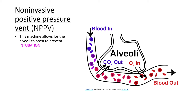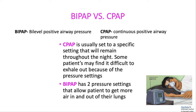Non-invasive positive pressure ventilation (NPPV) is commonly used for the patient with COPD, hypercarbia, acute asthma attack, or dyspnea. This machine uses positive pressure that allows the alveoli to open to prevent intubation. BiPAP delivers a set inspiratory pressure with each breath in, providing positive airway pressure. For CPAP, the goal is to expand collapsed alveoli and is commonly used for patients with OSA or sleep apnea. Both CPAP and BiPAP are used post-extubation to prevent re-intubation, or for patients with COPD or atelectasis from surgery.